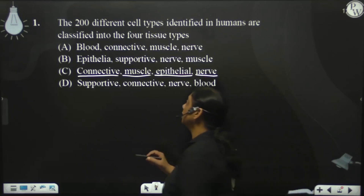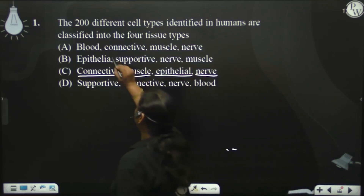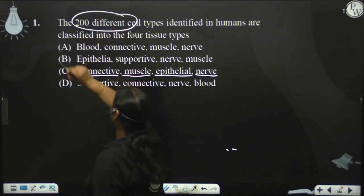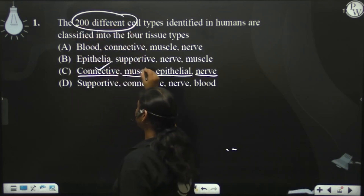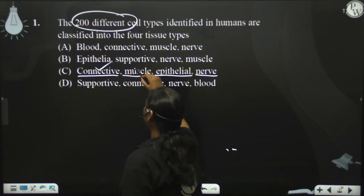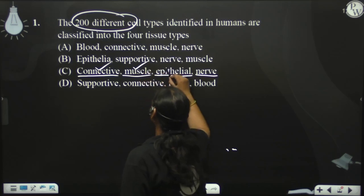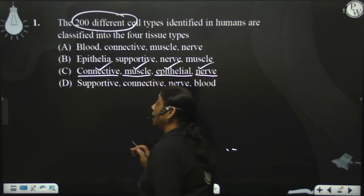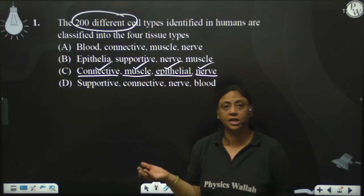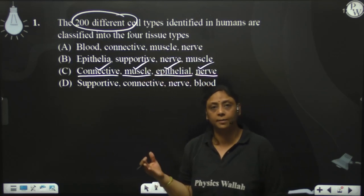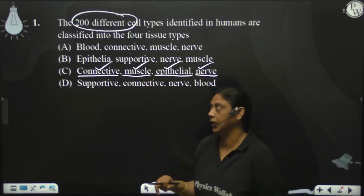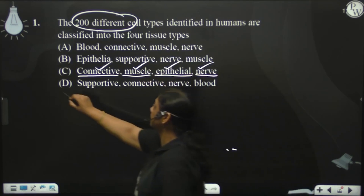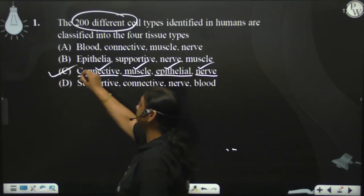Jo 200 different cells hain, vo categorized hain connective tissues mein, muscle mein, epithelial tissues mein, aur nerve mein. Inki bhi sub-categories hoti hain, jinko hum detail mein padhenge. Next question — third option is the right one, C is the right option, teachers.